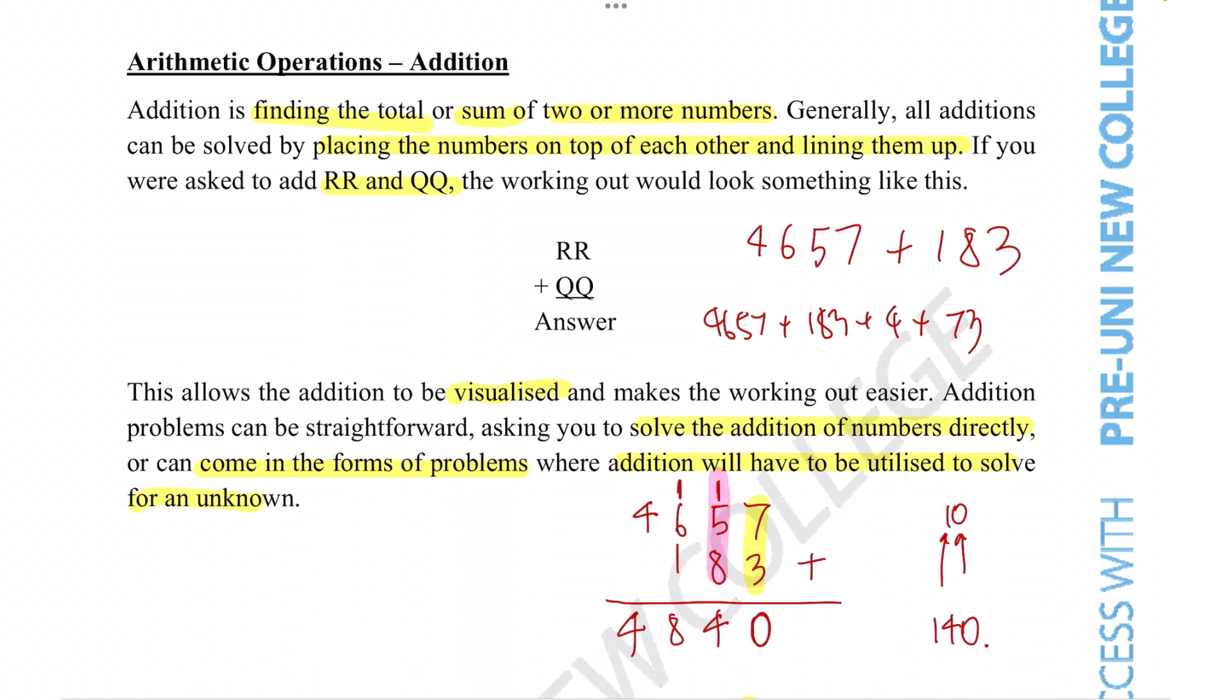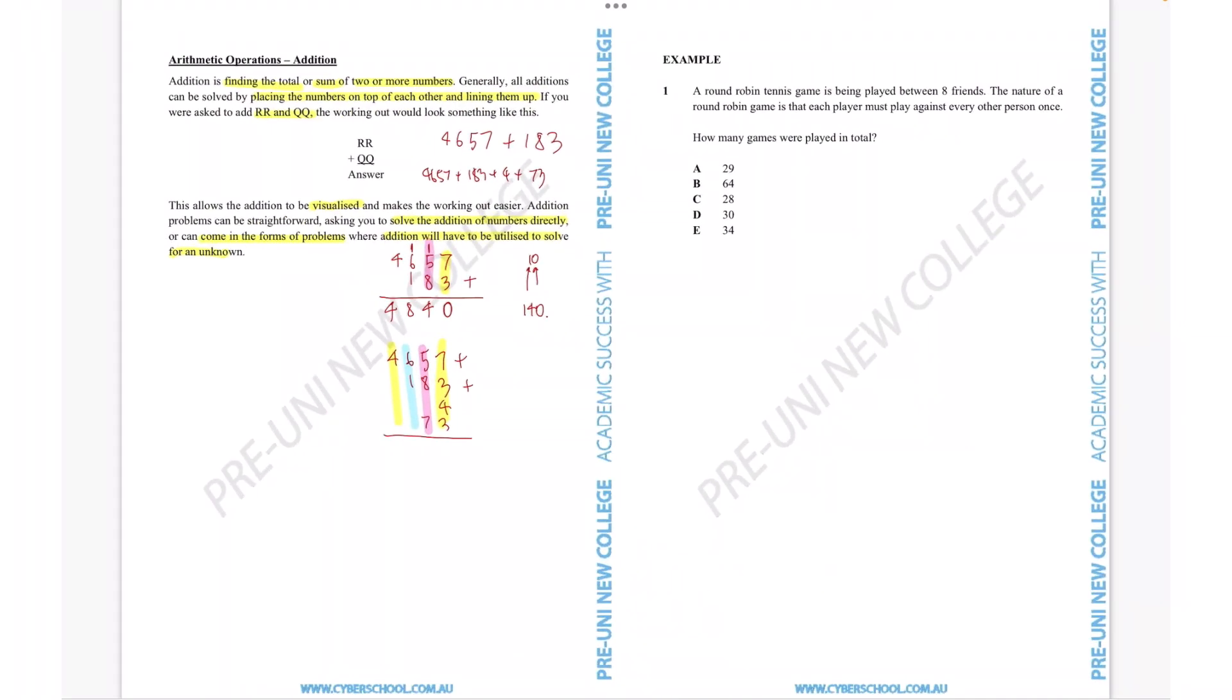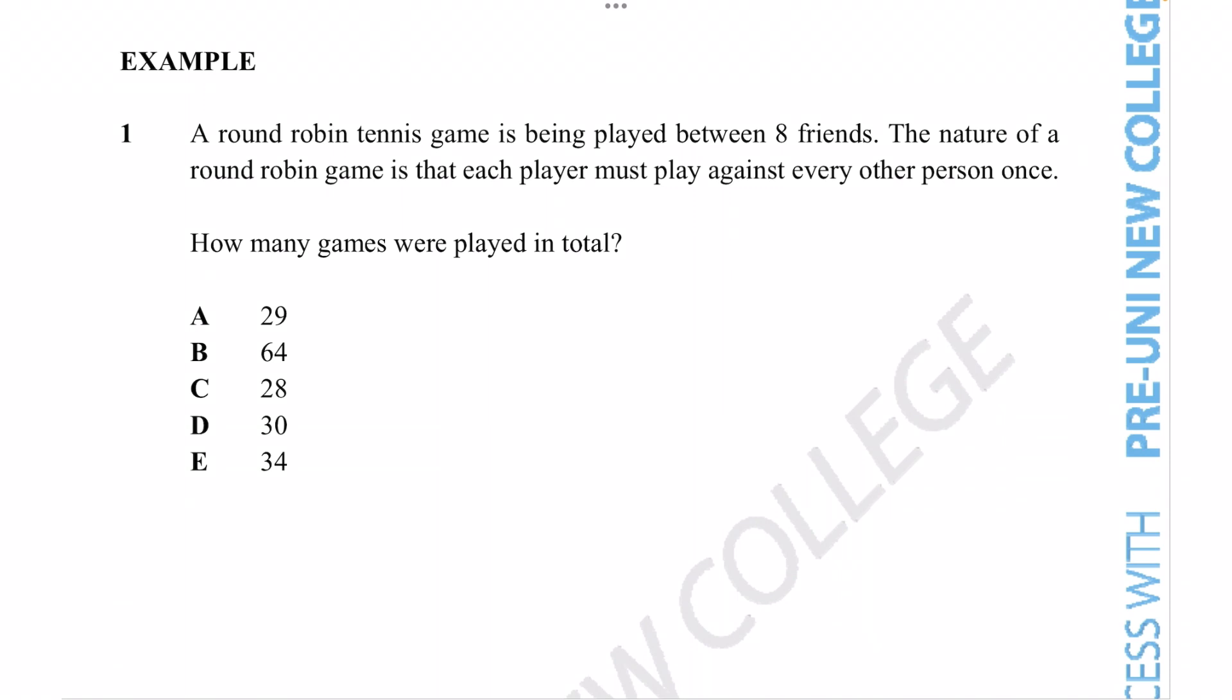As long as we read the question thoroughly and understand what the question wants from us, we can then utilize this technique to figure out the answer every time. Let's see if we can do so by trying out this example question. A round robin tennis game is being played between eight friends. The nature of a round robin game is that each player must play against every other person once. In this scenario, how many games were played in total?